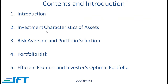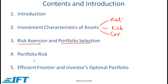Risk and return, part 1. In this reading we will talk about the investment characteristics of assets. We will look at different measures of return, how we measure risk, and correlation or covariance between assets. We will then talk about risk aversion, as different investors have different degrees of risk aversion which impacts portfolio selection. We'll talk about portfolio risk, the impact of correlation between assets on portfolio risk, and finally the efficient frontier and how to come up with an investor's optimal portfolio.